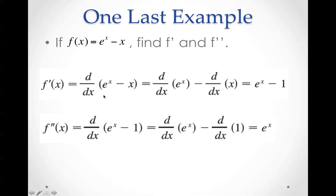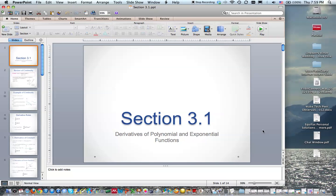Now, to find the second derivative, we're going to separate them again. Derivative of e to the x minus the derivative of 1. The derivative of 1 is 0, so it's going to be e to the x minus 0, or just plain e to the x. And that's it.